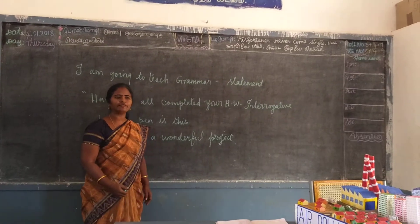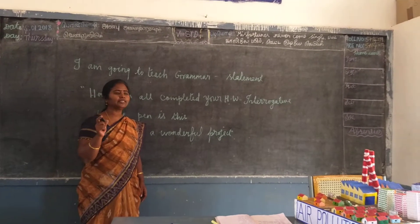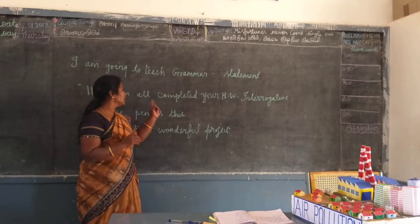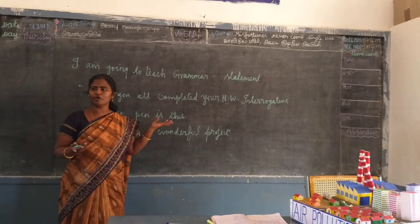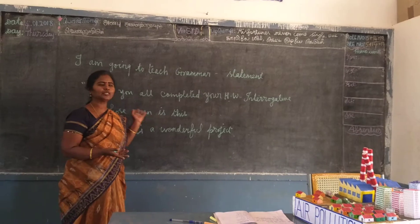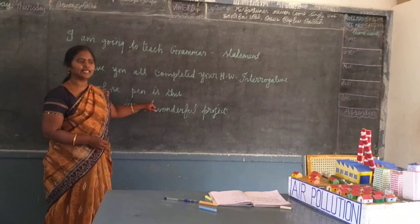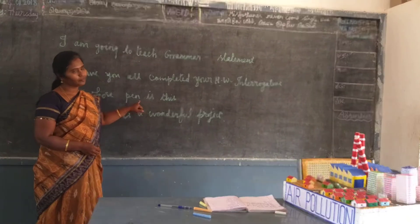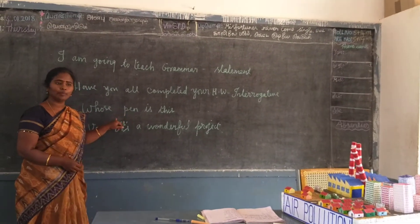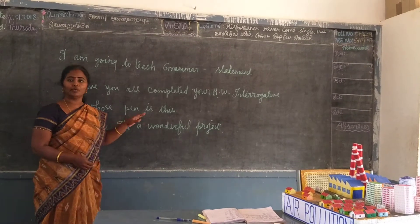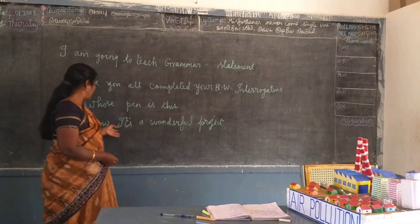How many types of interrogative sentences are there? Two — three types. One is WH-type question. Have you all completed? You said yes, some of you might say no. So this is a yes/no type question. Whose pen is this? What type of sentence is this? WH interrogative sentence. And the other last one is a tag question.